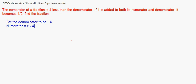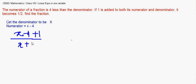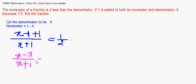If 1 is added to both numerator and denominator, the fraction becomes (x minus 4 plus 1) over (x plus 1), which equals 1 by 2. That is, (x minus 3) over (x plus 1) equals 1 by 2.